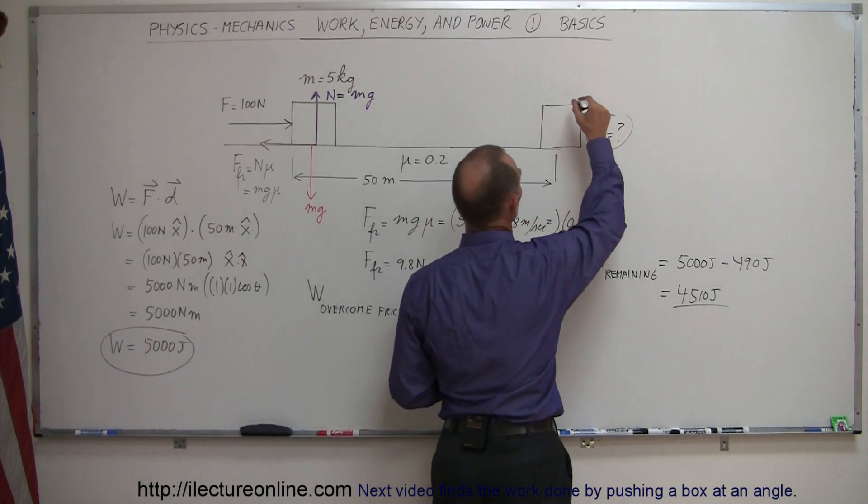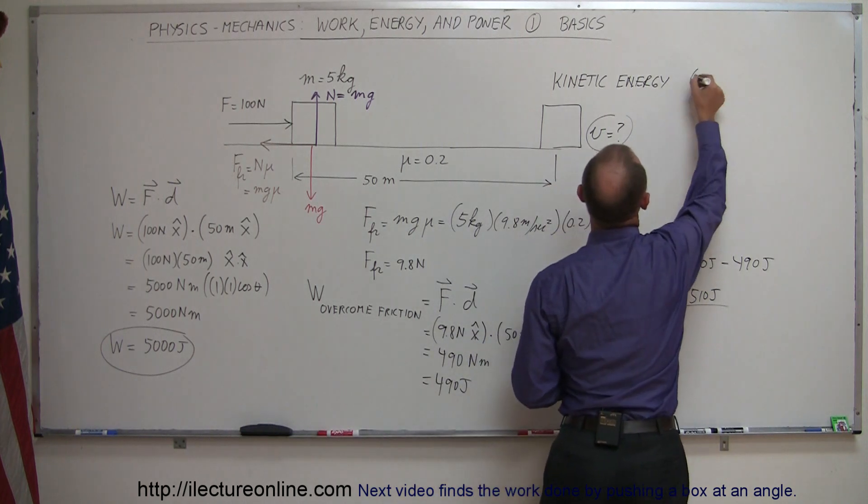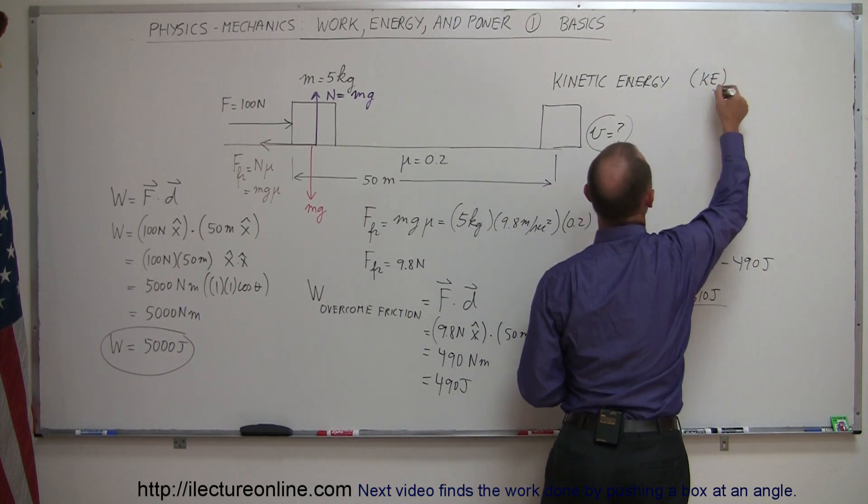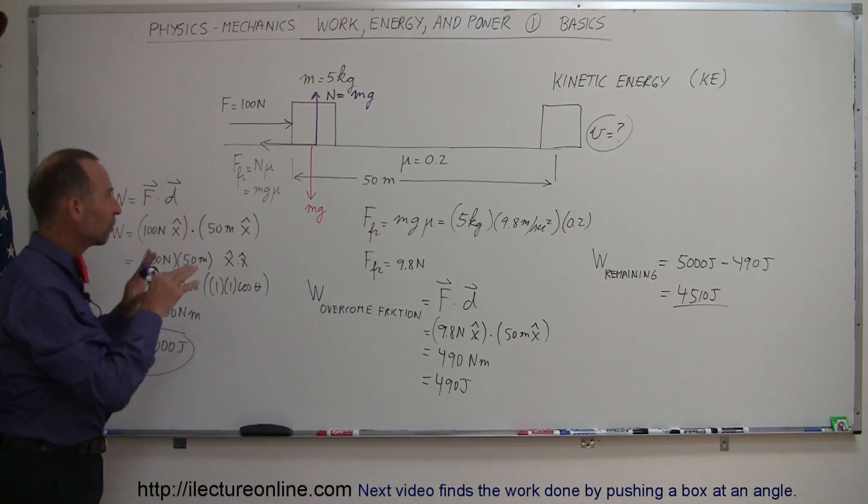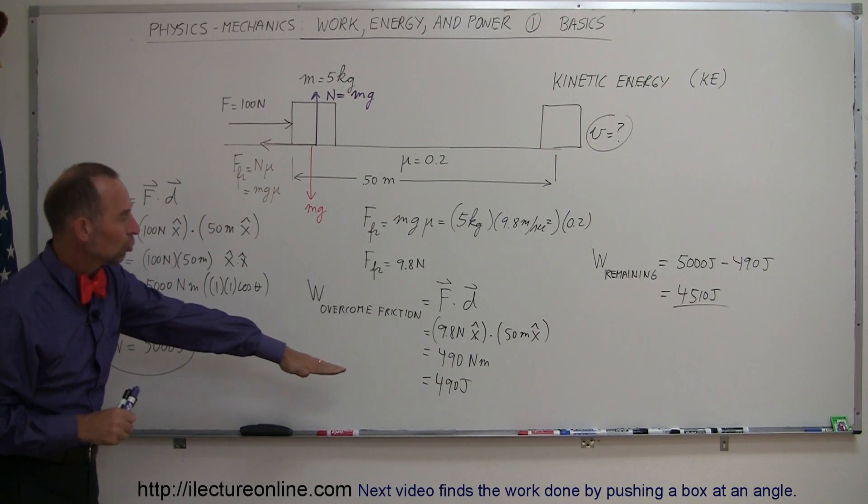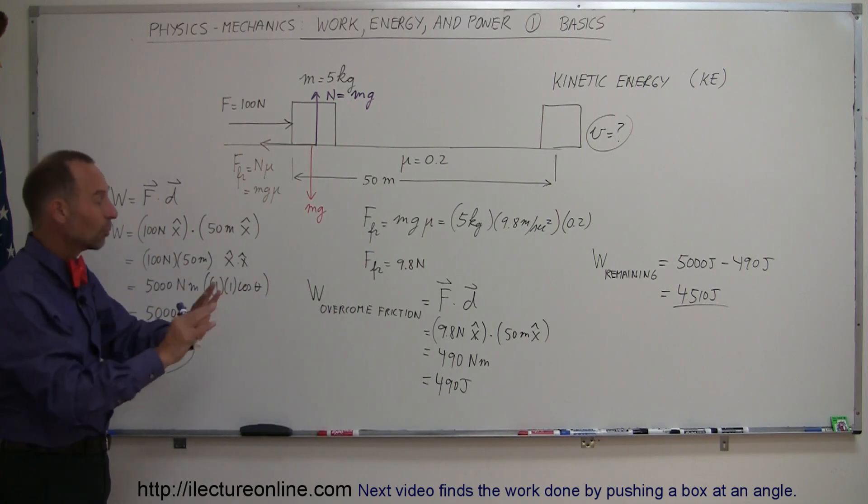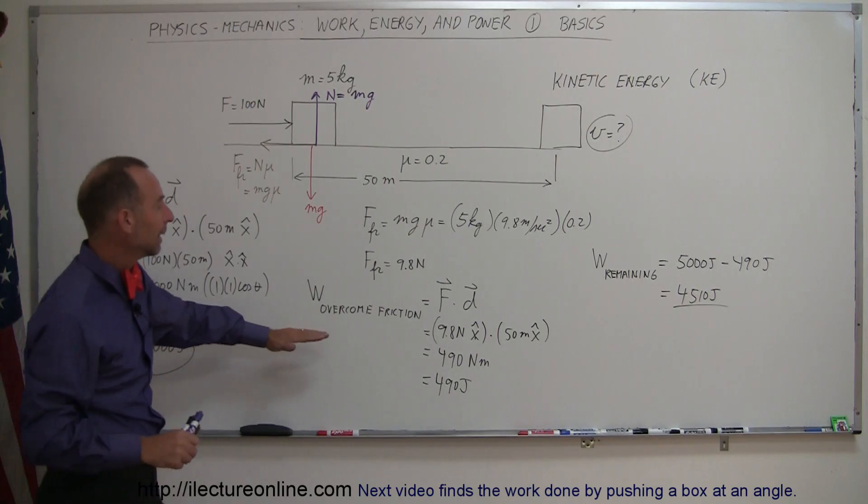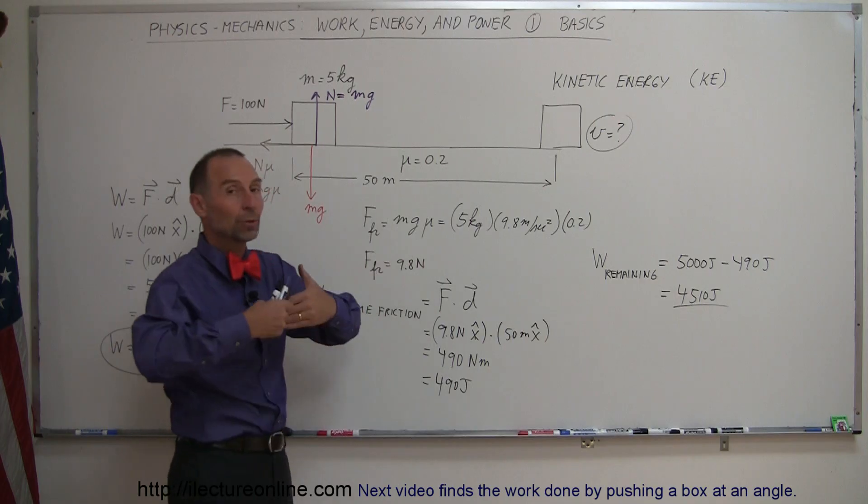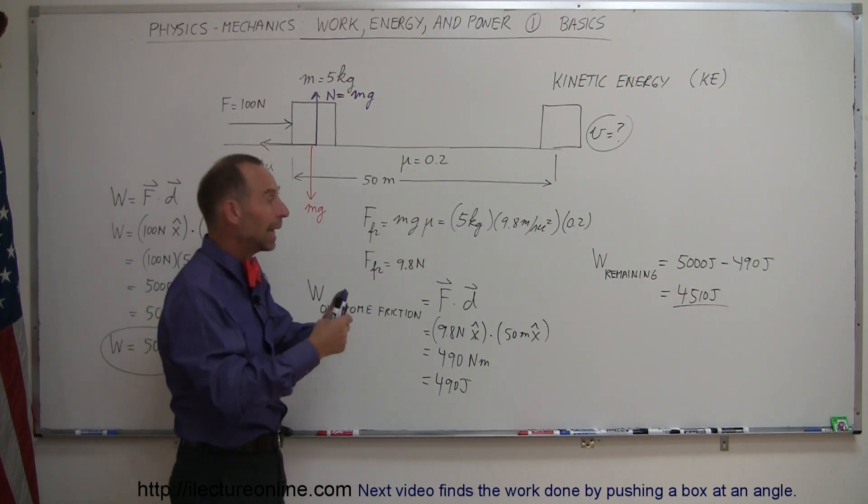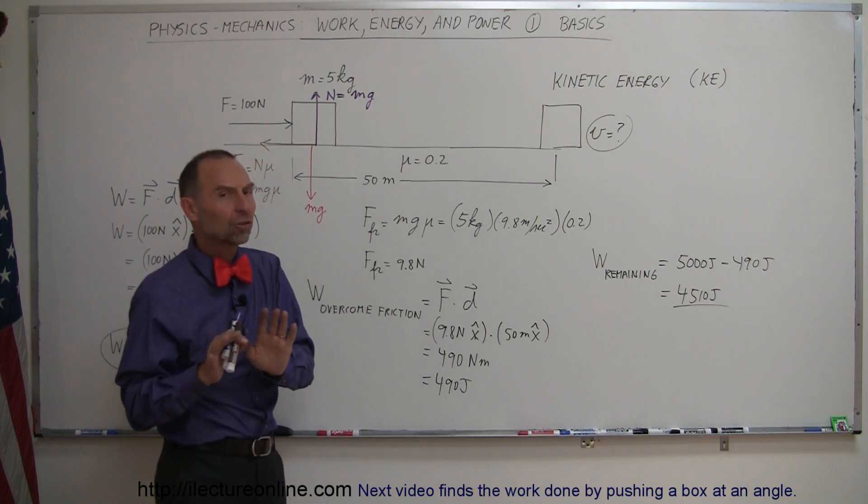And that will then turn into what we call kinetic energy. Which means that 5,000 joules of work was put into the block, 490 joules was used to overcome friction, and of course when you overcome friction, that then gets turned into heat, and we'll talk about that more later. And then the remaining 4,510 joules are then used to put energy into the block, so when you put work into an object, you put energy into it.